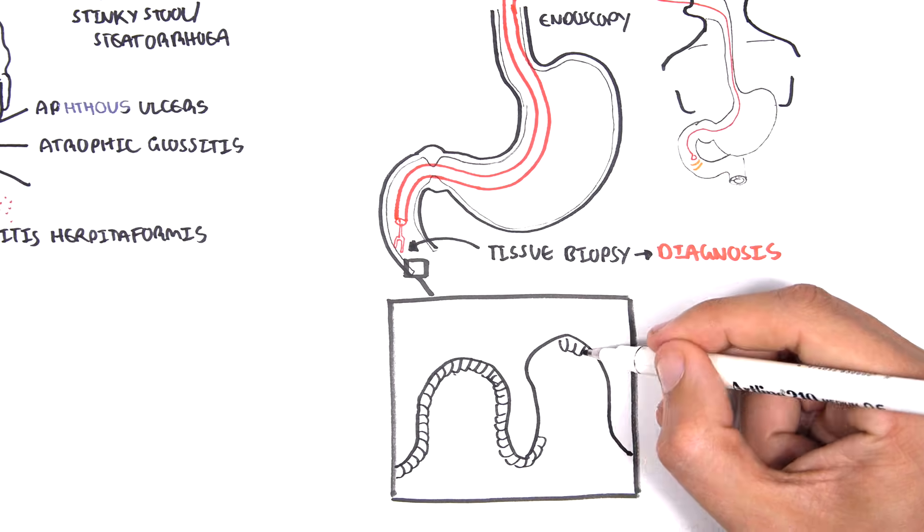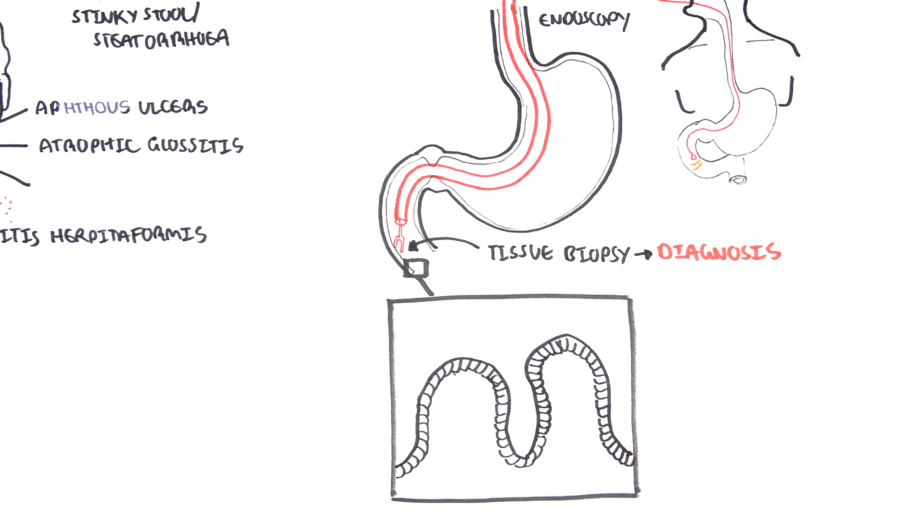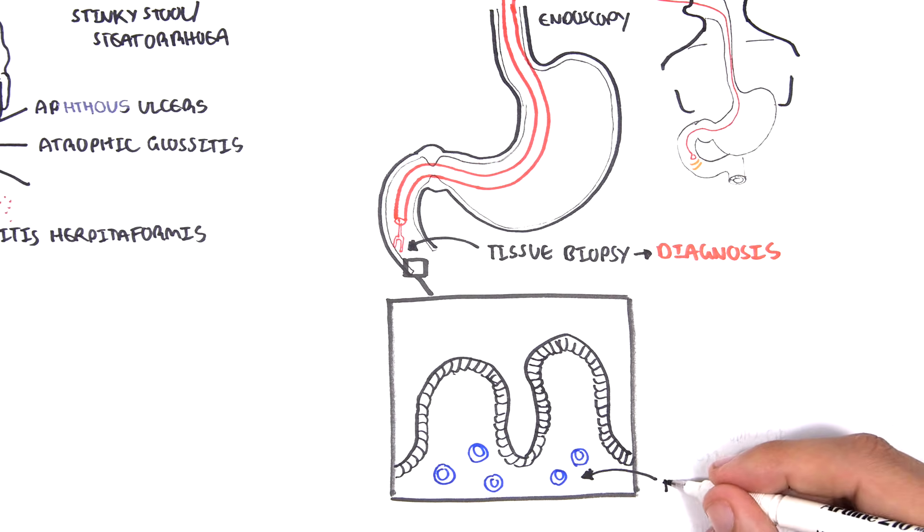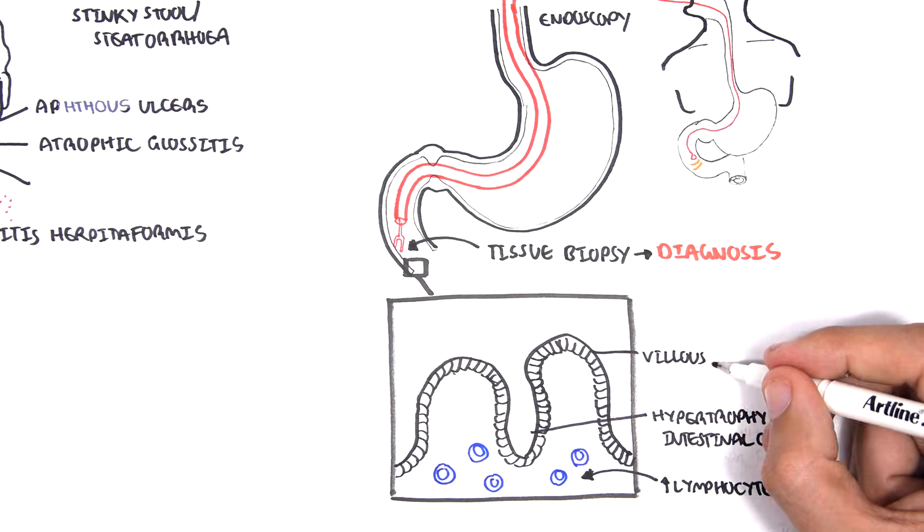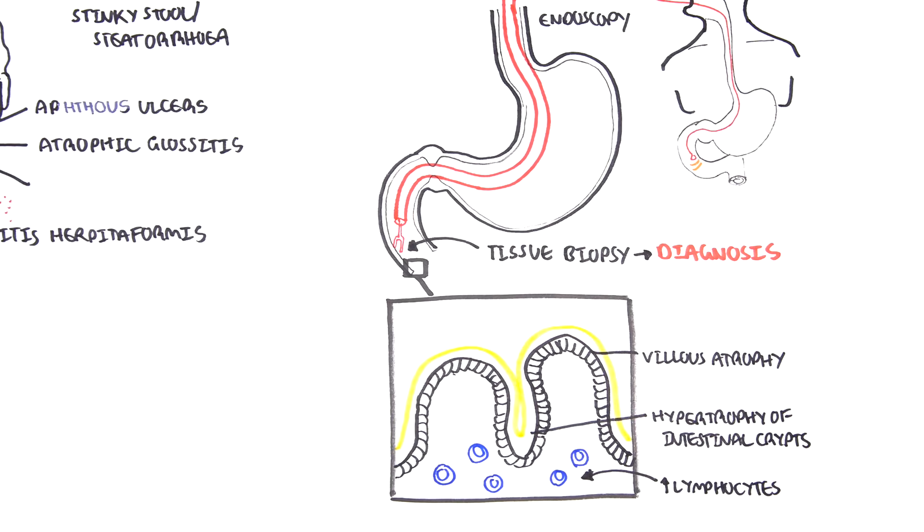The changes seen in active celiac disease include increase in lymphocytes in the area, hypertrophy of the crypts, as well as villus atrophy. And this is the hallmark for the diagnosis of celiac disease.